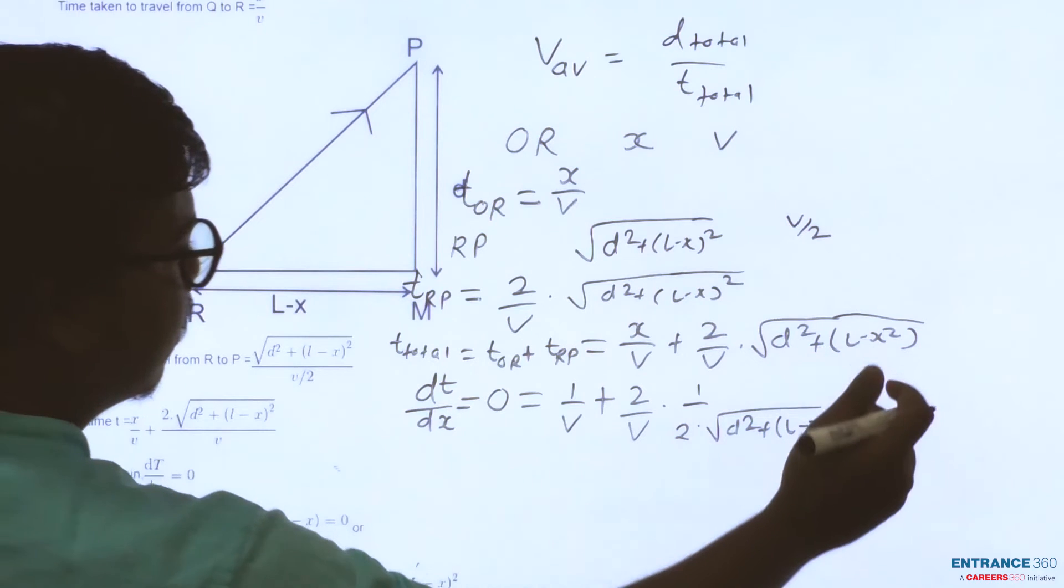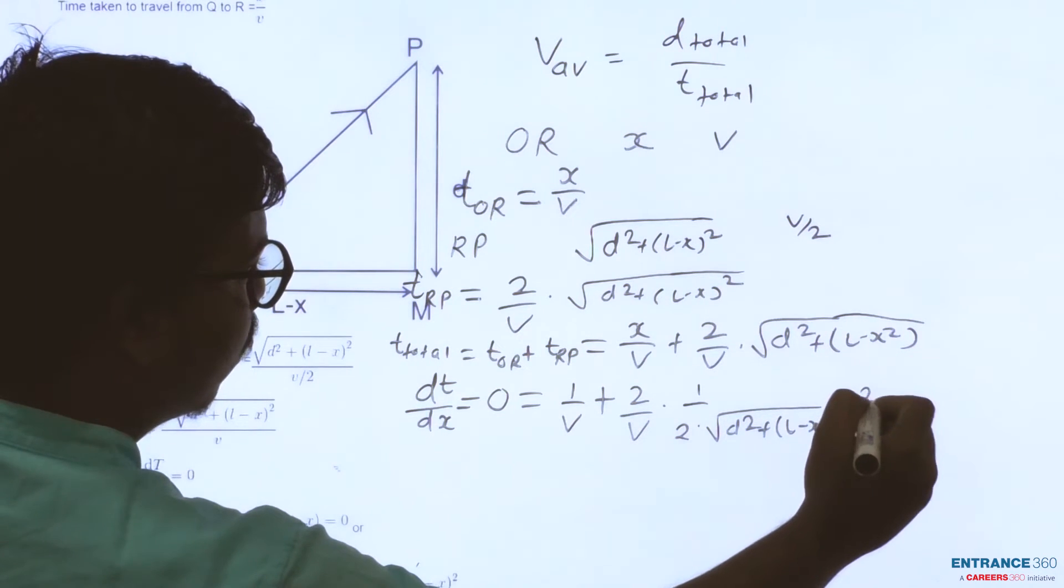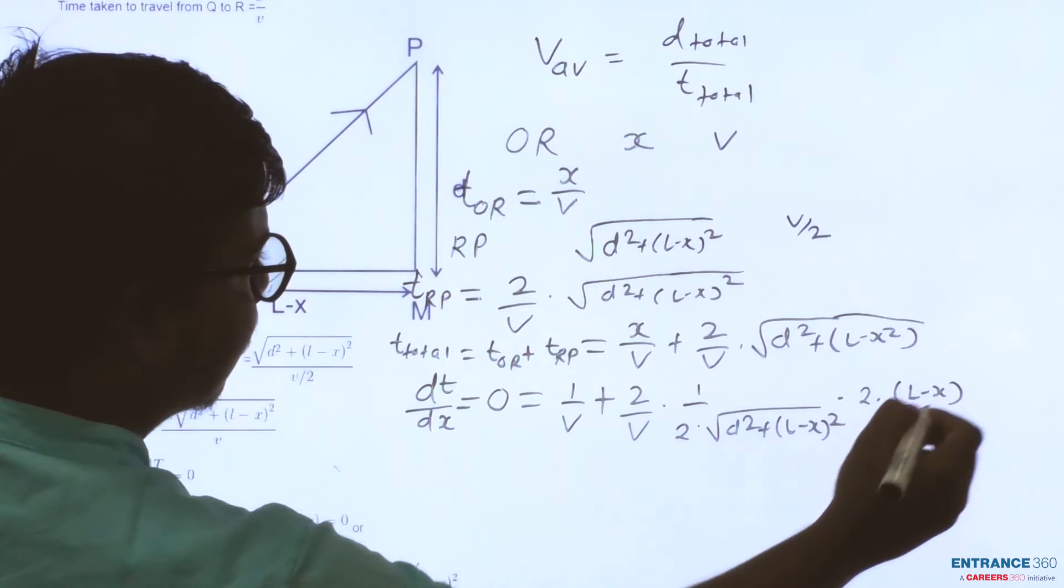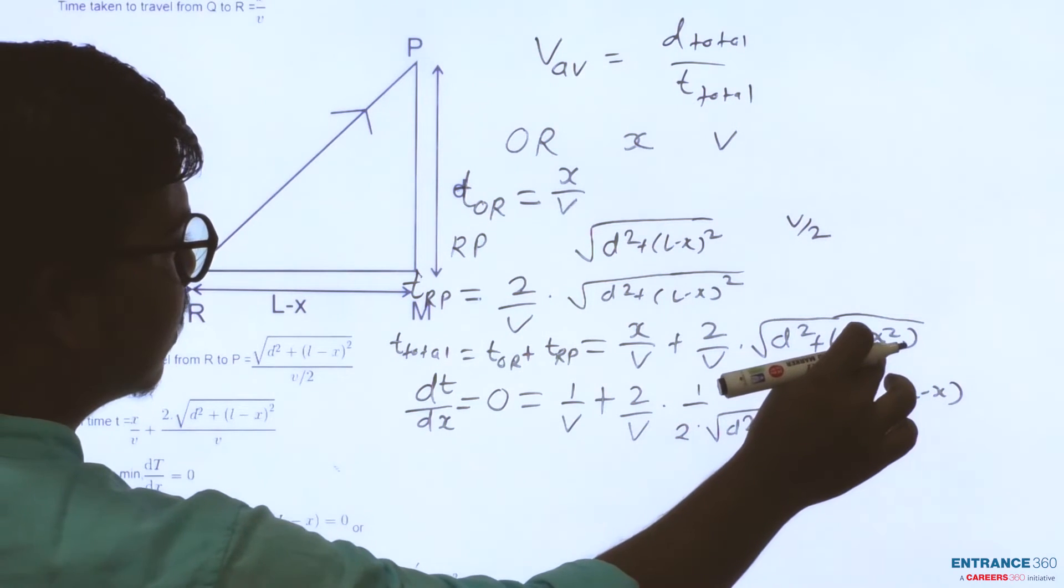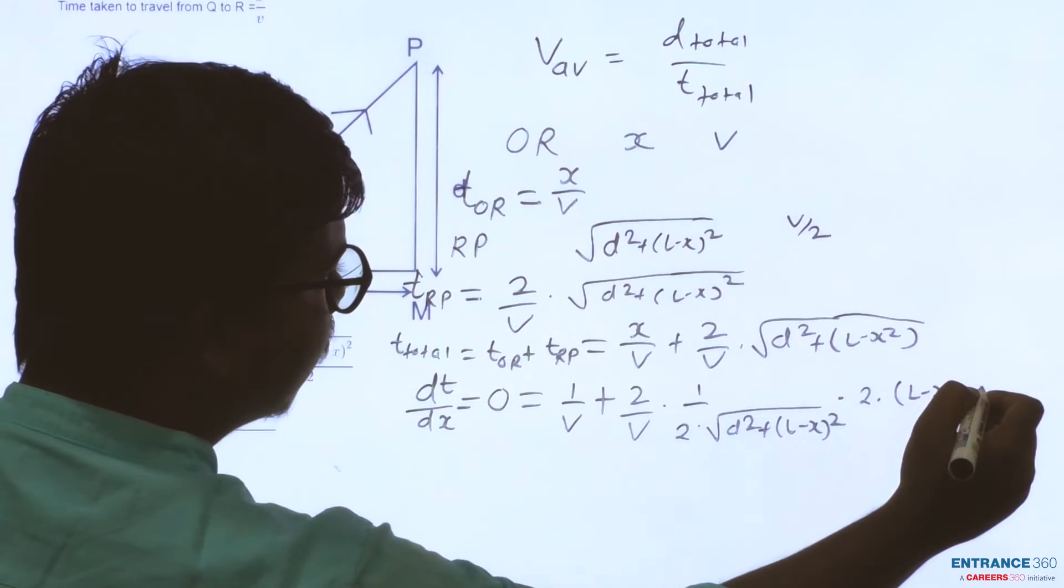The differentiation of this quantity is simply 2 times (L-X), then again we have to differentiate the minus quantity which is minus 1.